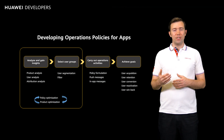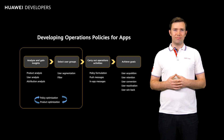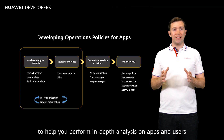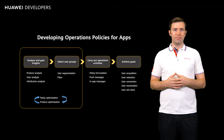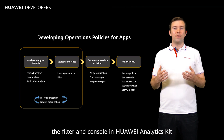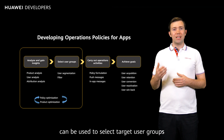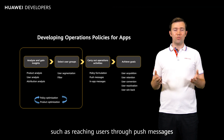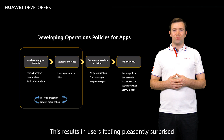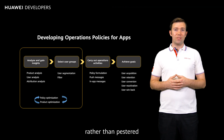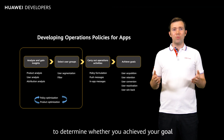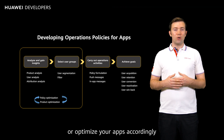After these objectives are determined, you'll need to implement targeted data analysis. Huawei Analytics Kit provides various analysis models to help you perform in-depth analysis on apps and users. Once the analysis is complete, the filter and console in Huawei Analytics Kit can be used to select target user groups. Then implement operations such as reaching users through push messages, resulting in users feeling pleasantly surprised and excited rather than pestered. You'll need to go back to the console to compare data before and after the operations to determine whether you achieved your goal, and change the operations or optimize your apps accordingly.